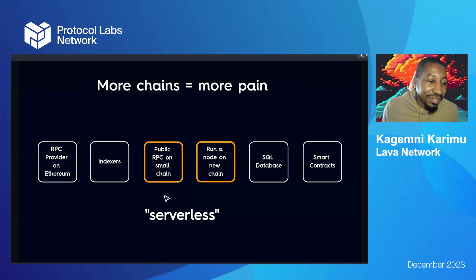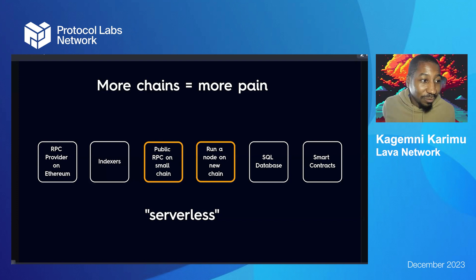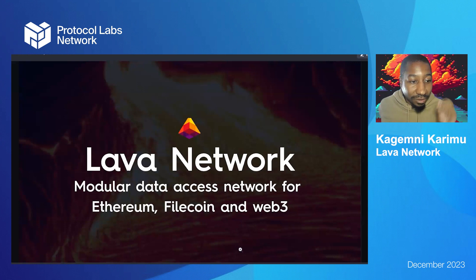Public RPCs get launched on small chains, they get overwhelmed oftentimes, and then developers want to build their dApp. So they end up running a node on new chains in order to be able to service that chain and run their dApp.